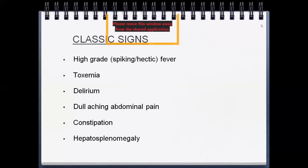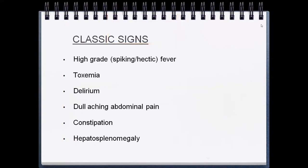Classical signs include high-grade spiking or hectic fever, and toxemia — the child looks very toxic, has high-grade fever, and cannot sit properly. There may be delirium, with illusions and disorientation to time, place, and person. There can be dull aching abdominal pain, constipation, and on examination there may be abdominal tenderness. Any of these findings should raise suspicion of enteric fever.